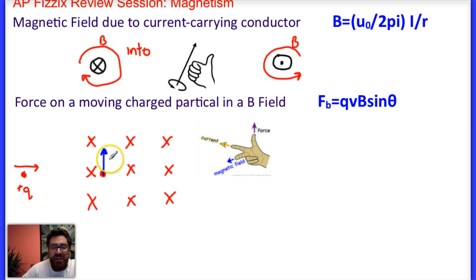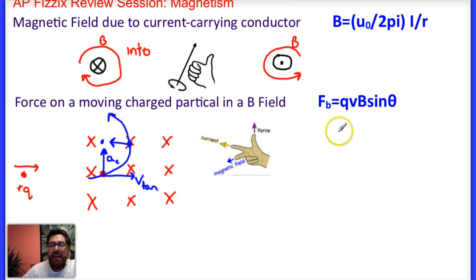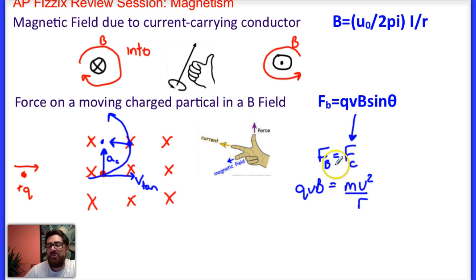Notice that the direction of the force — and therefore the direction of acceleration — is radially inward toward the center of the circle, while the velocity is tangential. This creates circular motion. Applying the right-hand rule at any other point confirms the magnetic force remains radially inward, causing a circular path. The magnitude is Fb = QvB sinθ. Since the magnetic force is the centripetal force, we also have QvB = mv²/r.